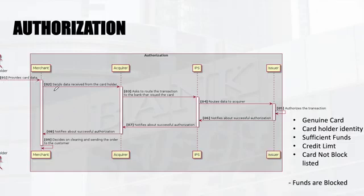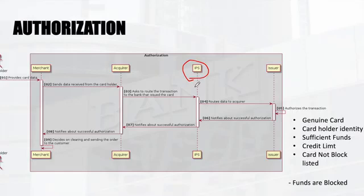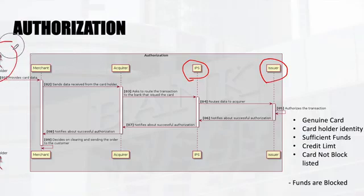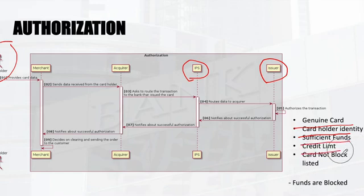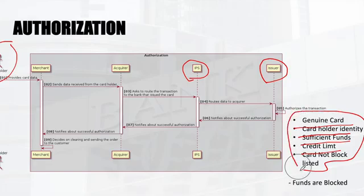The cardholder swipes the card, the information goes via the acquirer and IPS — such as Visa and Mastercard — to the issuer. The IPS provides network connectivity and data safety. The issuer, which has all information about the specific cardholder, checks whether it's a genuine card, the cardholder's identity is genuine, sufficient funds are available, the amount is within the credit limit, and the card is not blocklisted. Once authorization is done, the funds on the card are blocked.